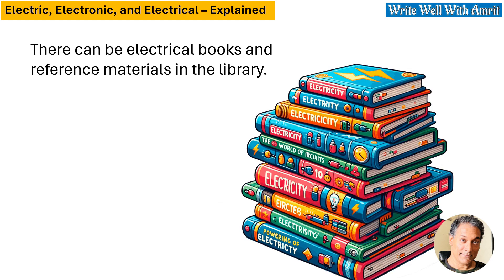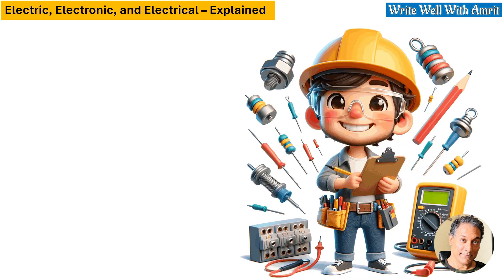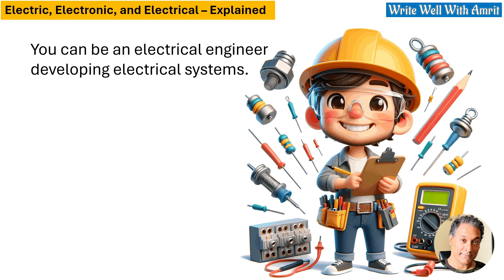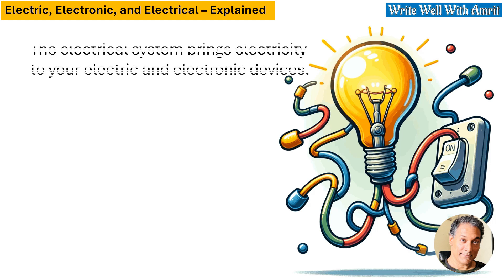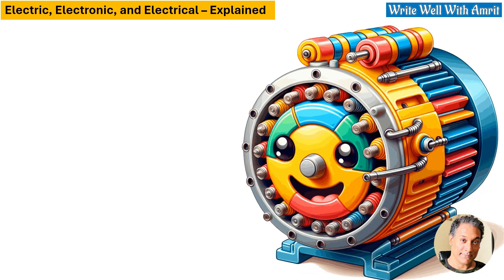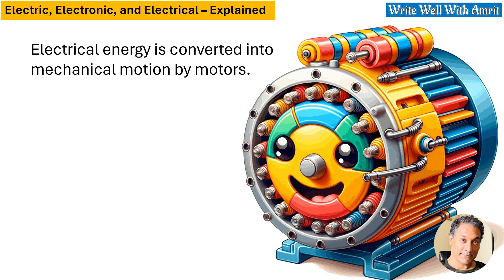There can be electrical books and reference materials in the library. You can be an electrical engineer developing electrical systems. The light bulb and the wiring that brings electricity to your appliances are electrical components. The electrical system brings electricity to your electric and electronic devices, and electrical energy is converted into mechanical motion by motors.